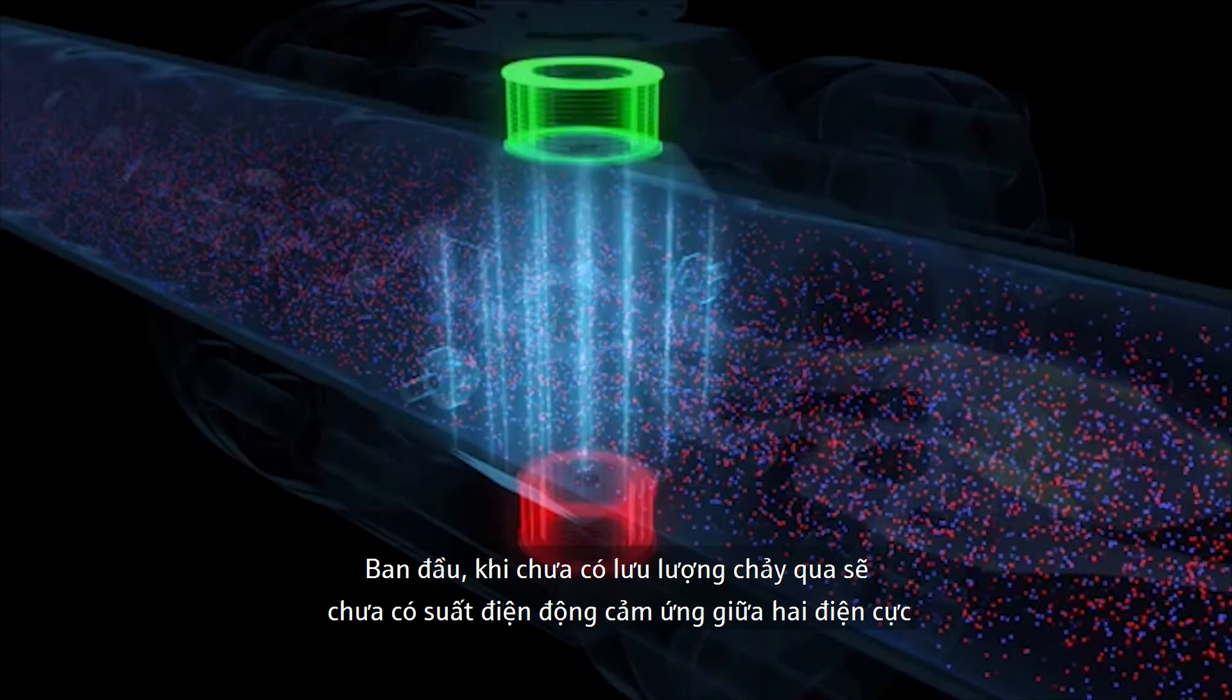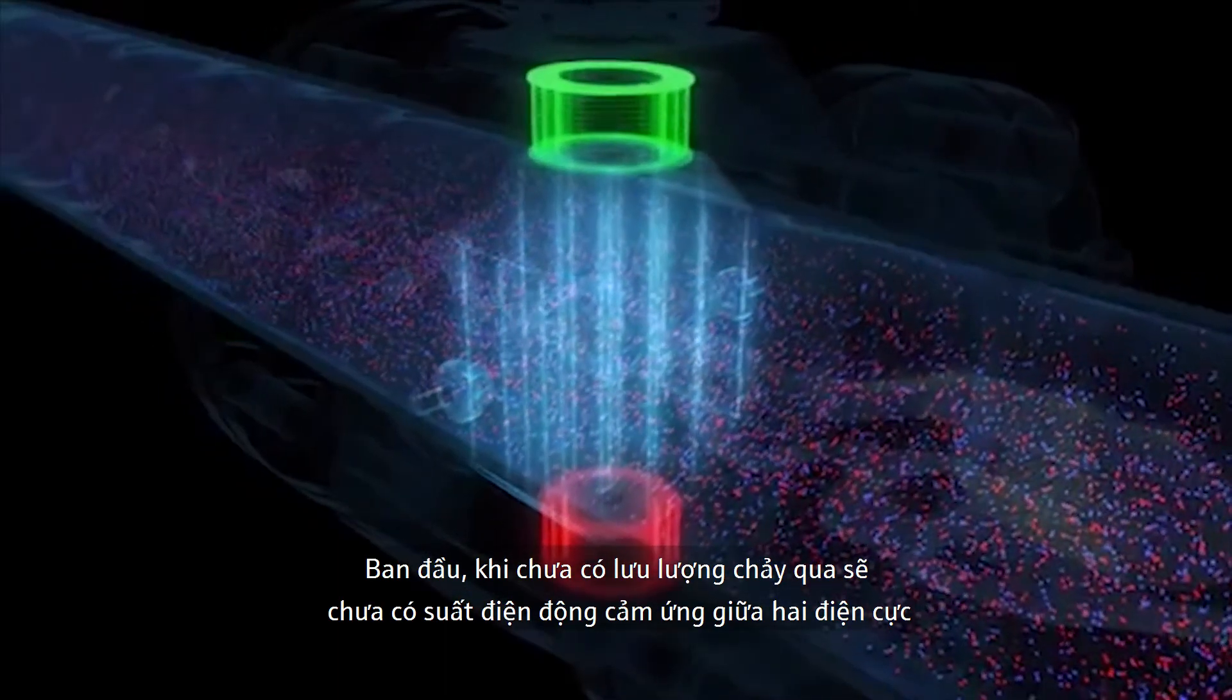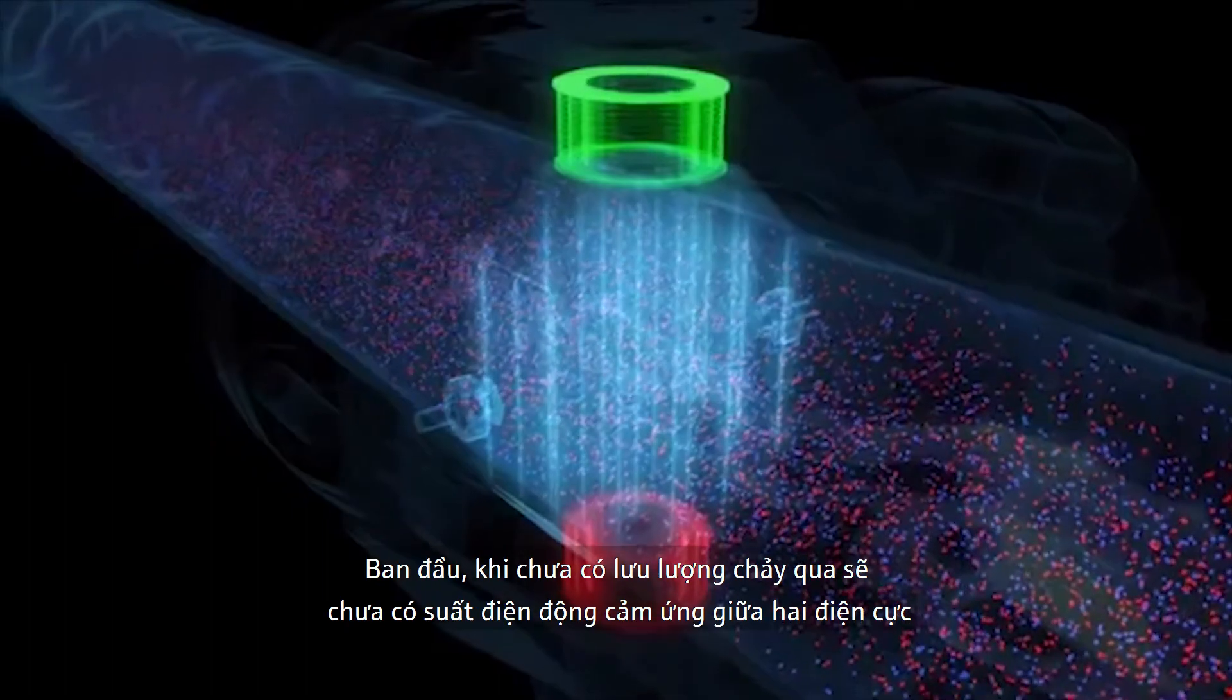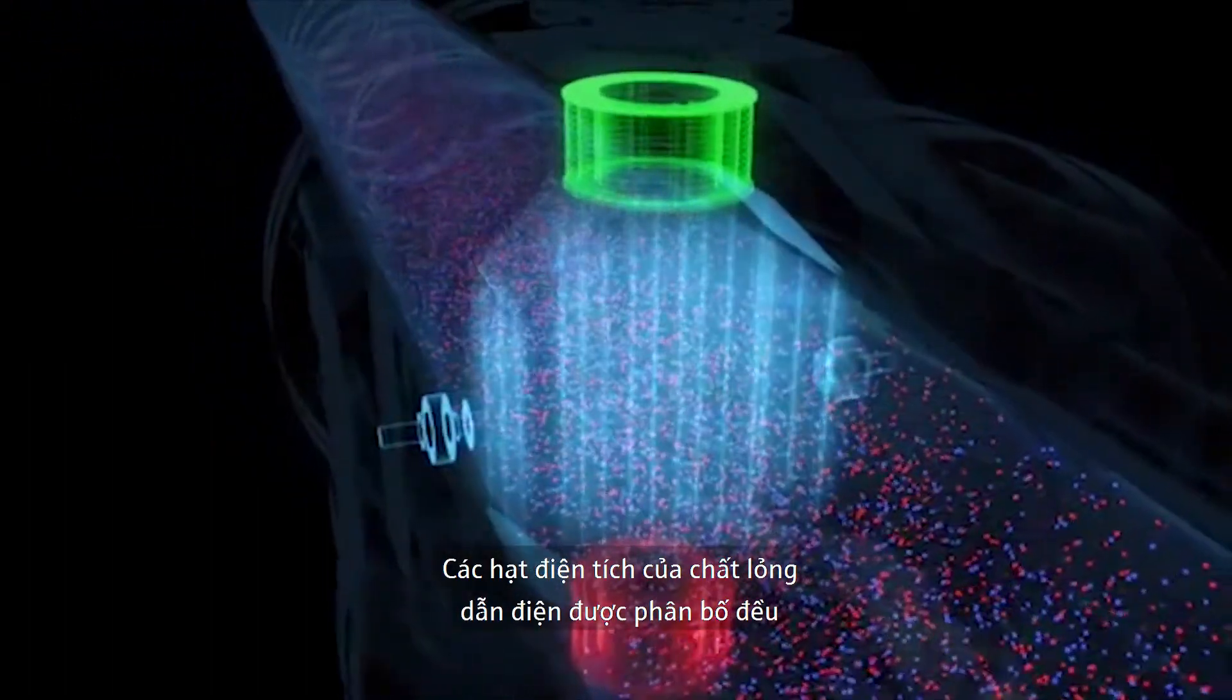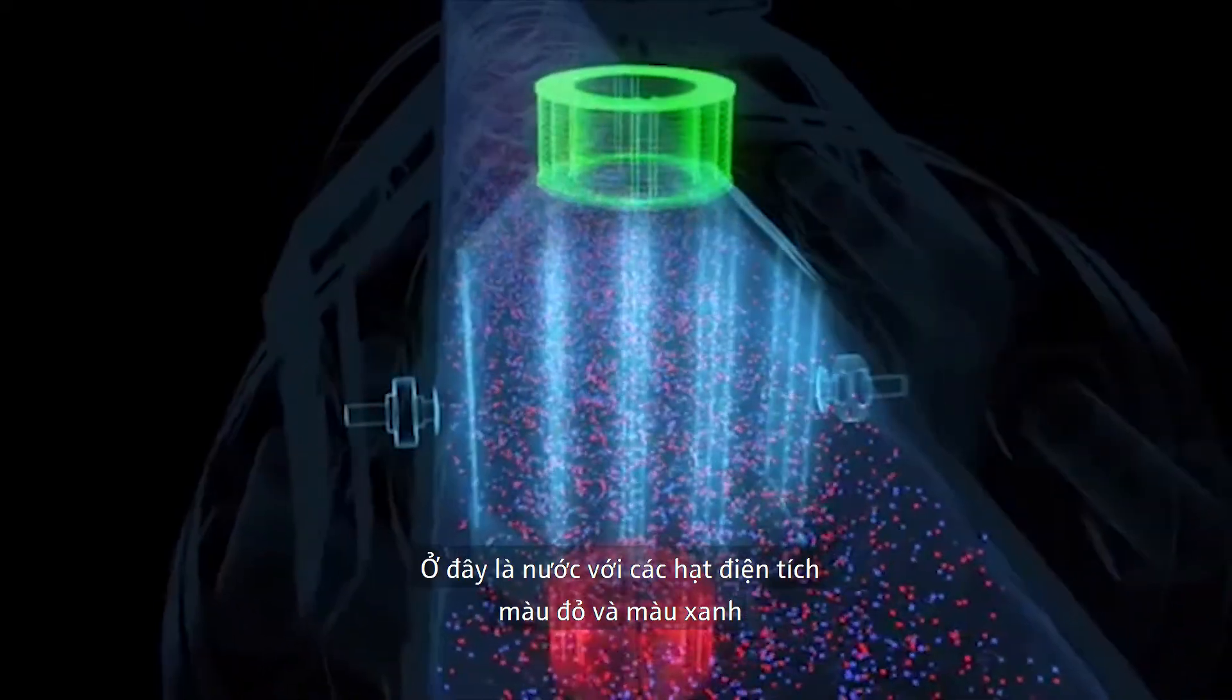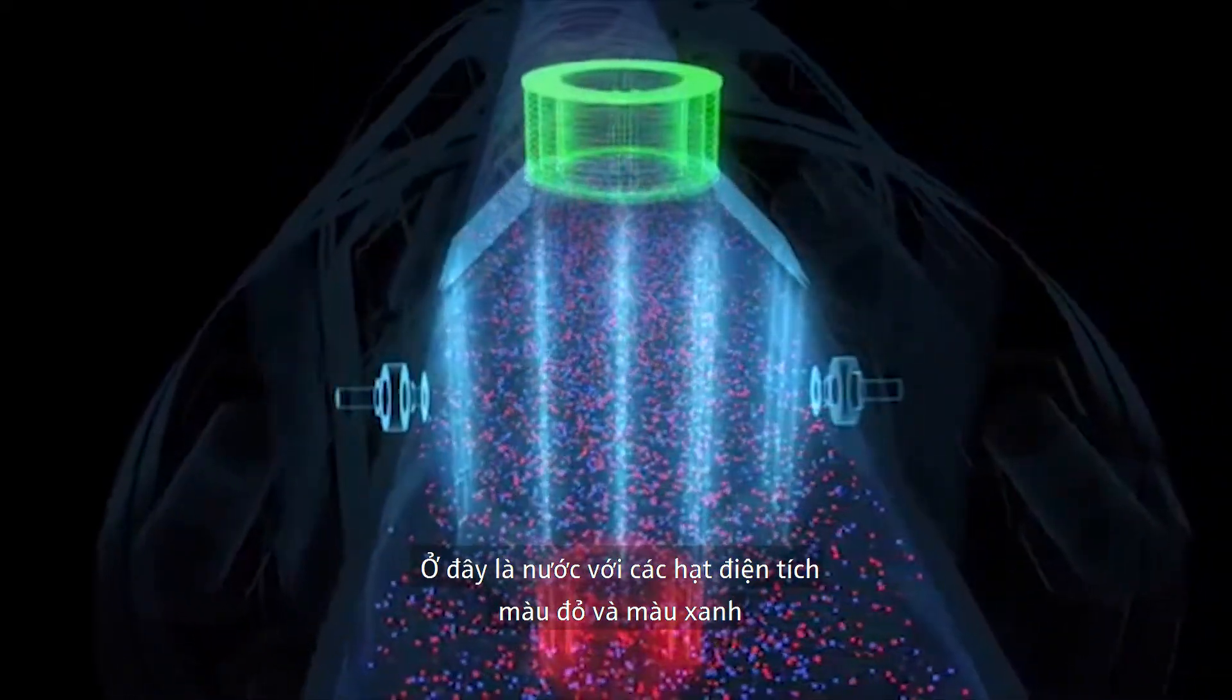If there is no liquid flow, no induced electrical voltage is measured at first between the two electrodes. The electrically charged particles of the conductive liquid are evenly distributed, shown here in water with red and blue particles.